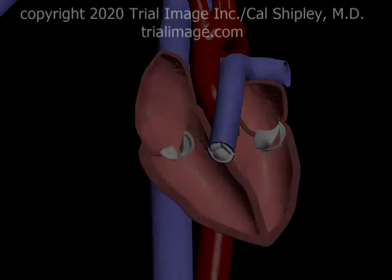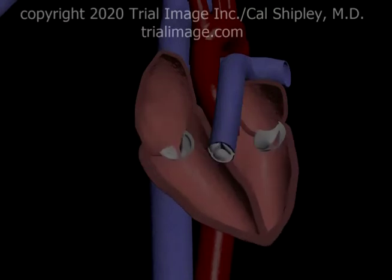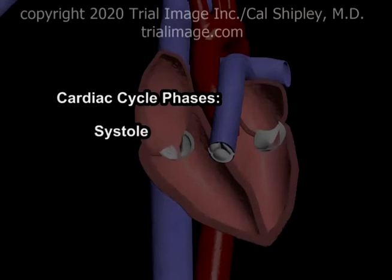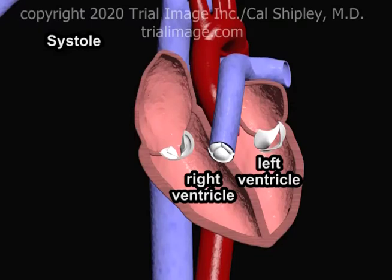We've identified the key anatomical components of the cardiac cycle, as well as tracing the flow of blood from the time that it enters and then exits the heart. Now let's study the timing and coordination of chamber contraction and valvular function. The cardiac cycle is divided into two main phases: systole and diastole. The first event that occurs during systole is the simultaneous contraction of both the right and left ventricles.